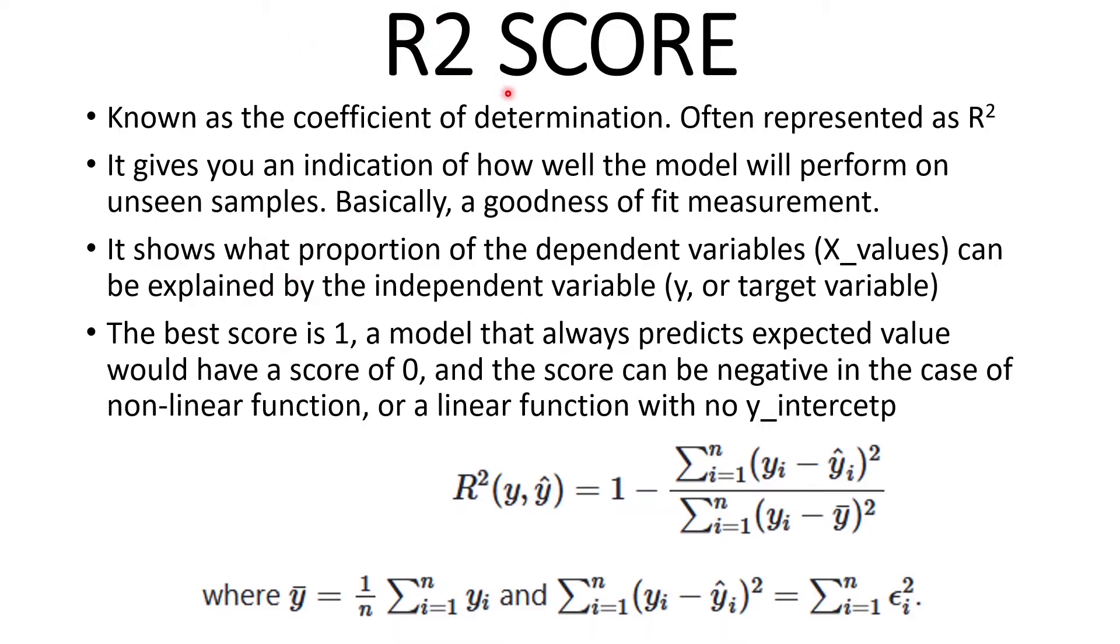Now we have R2 score. R2 score is known as the coefficient of determination and is often represented as R squared in this format. It gives an indication of how well the model will perform on unseen samples. Basically a goodness of fit measurement. It shows what proportion of the dependent variable (that's the x values) can be explained by the independent variable, which is the y or the target variable.